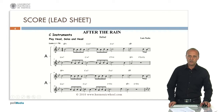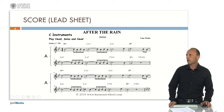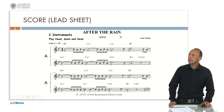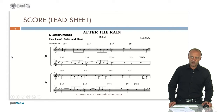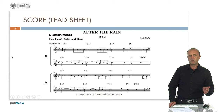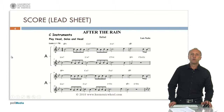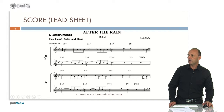To explain improvisation I chose one of my compositions called After the Rain, which is a jazz ballad. The structure of this composition is a standard jazz form. It means that it has four phrases A, A, B, A with eight bars each. Here you can see phrase A — eight bars. Again phrase A —